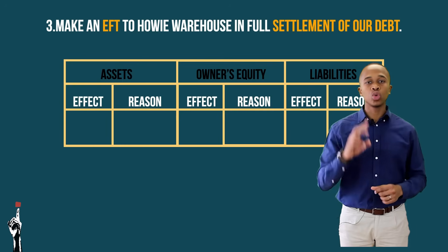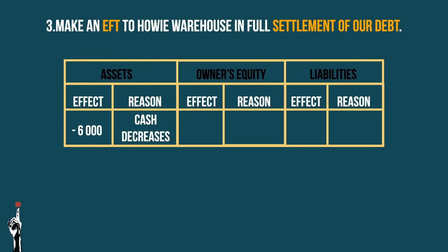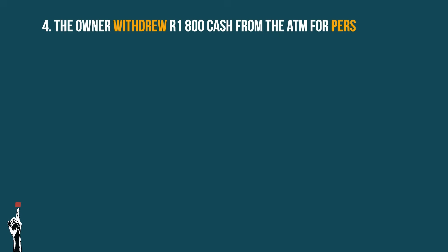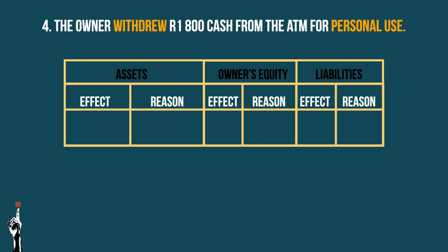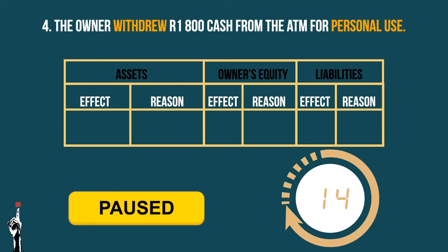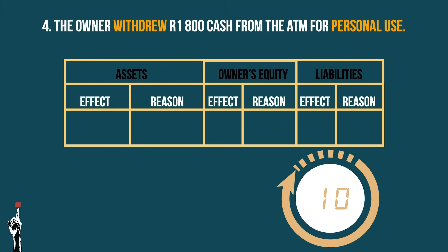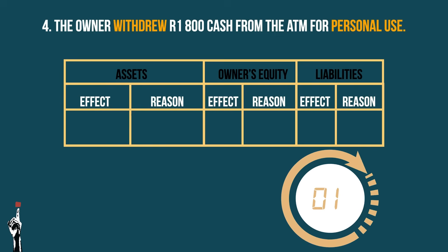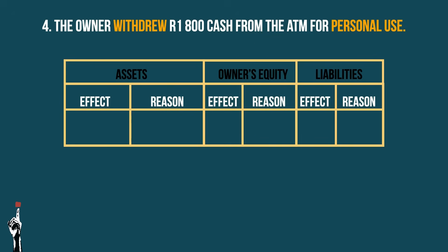Answer in three, two, one. Cash will decrease as the business made an EFT payment. This was done to settle their debt, so liabilities will decrease as the business now owes less. Last transaction: the owner withdrew R1,800 cash from the ATM for personal use. Pause button.